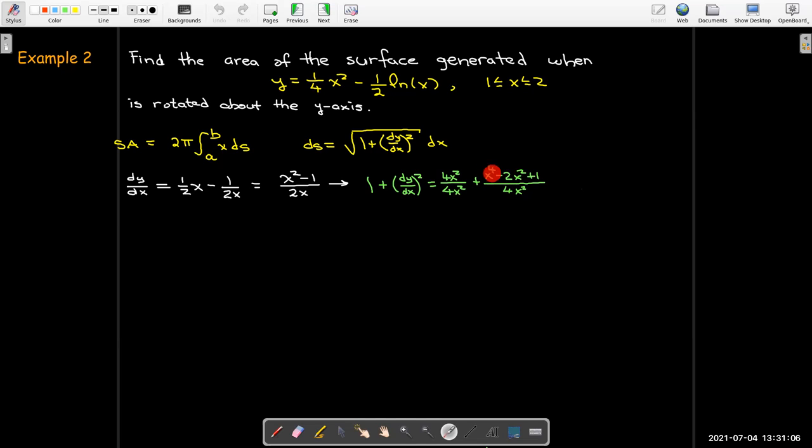Now I collect like terms. We see something happening like we saw with some of our arc length problems. After I write this as a single fraction and collect terms in the numerator, the numerator is a perfect square - it's (2x² + 1)². So when I take the square root of that, the top and bottom are both perfect squares, so I get a much simpler integral to evaluate.